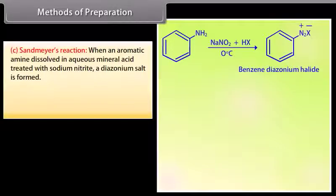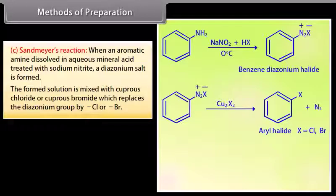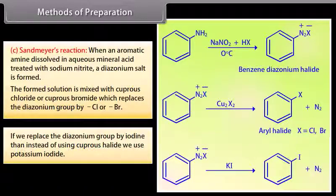Sandmeyer's reaction: when an aromatic amine dissolved in aqueous mineral acid is treated with sodium nitrate, a diazonium salt is formed. The formed solution is mixed with cuprous chloride or cuprous bromide, which replaces the diazonium group by Cl or Br. If we replace the diazonium group by iodine, then instead of using cuprous halide, we use potassium iodide.